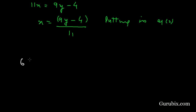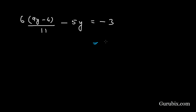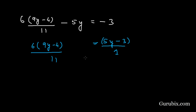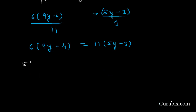Equation number 2 is 6x − 5y = −3. Substituting x = (9y − 4) / 11, we get 6(9y − 4) / 11 − 5y = −3. Taking −5y to the right hand side: 6(9y − 4) / 11 = 5y − 3. Cross multiplying gives us 6(9y − 4) = 11(5y − 3), which expands to 54y − 24 = 55y − 33.